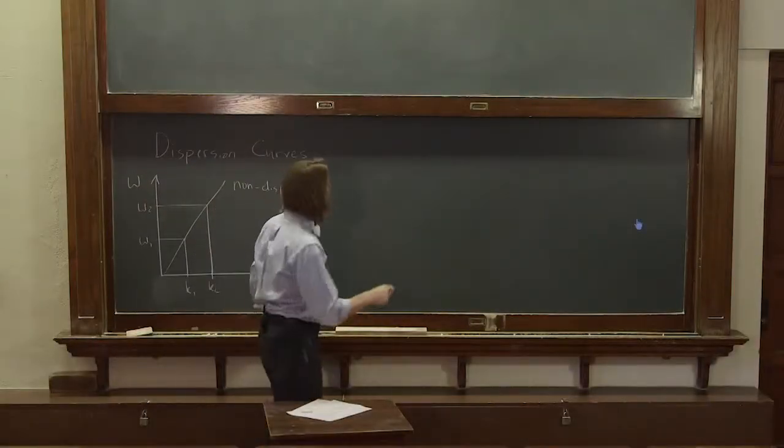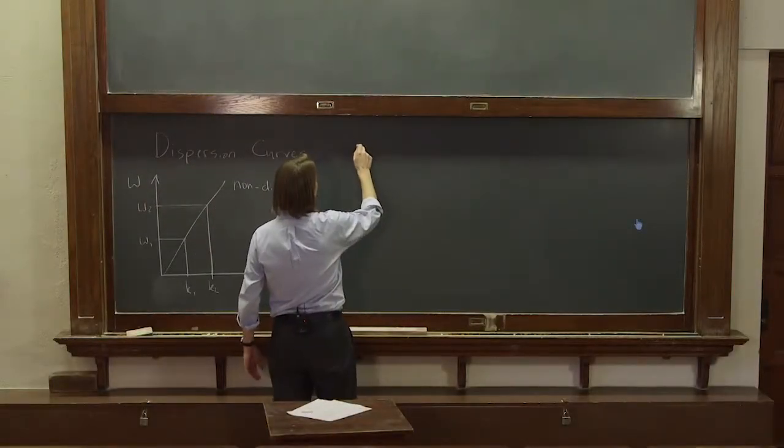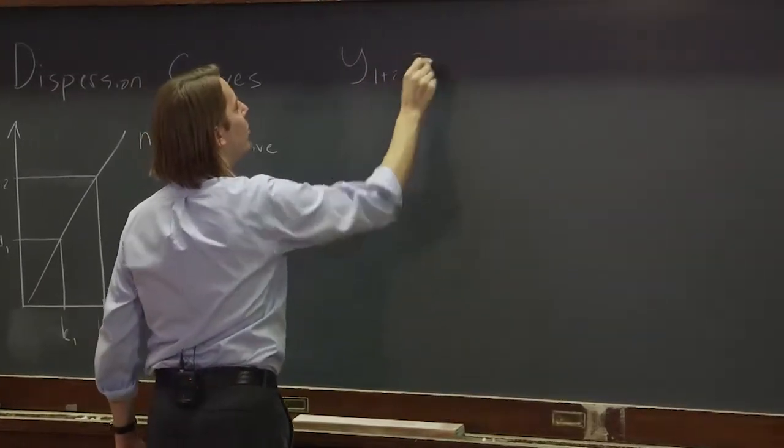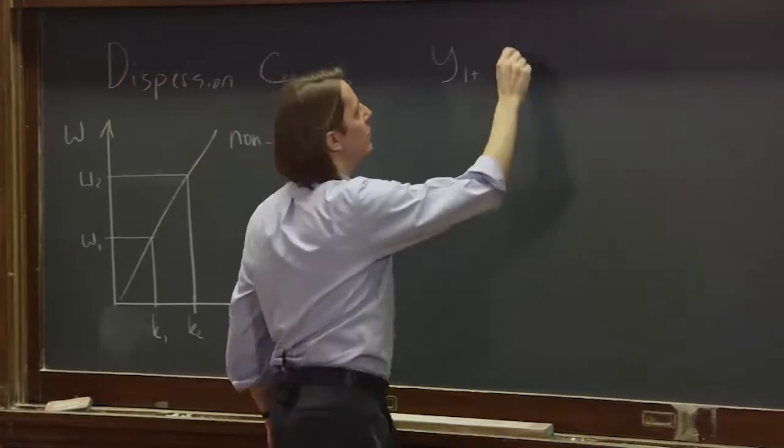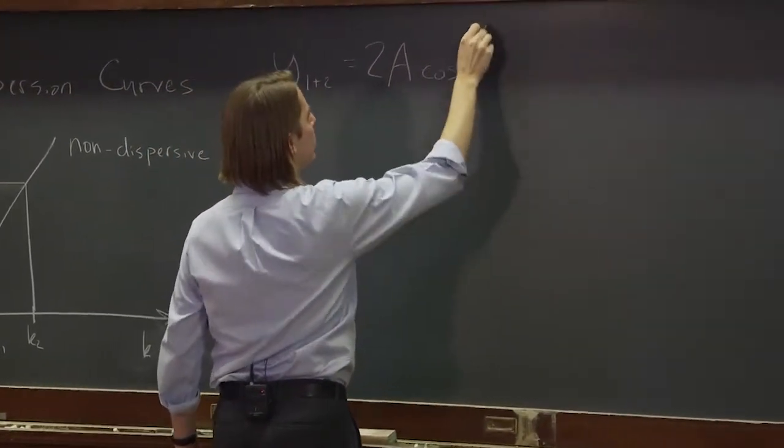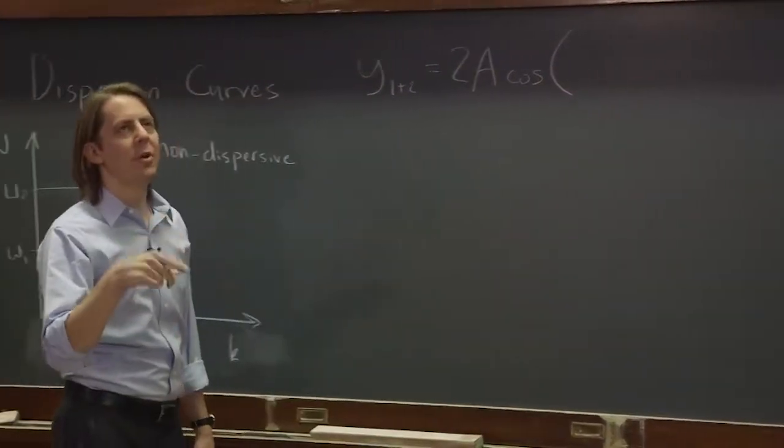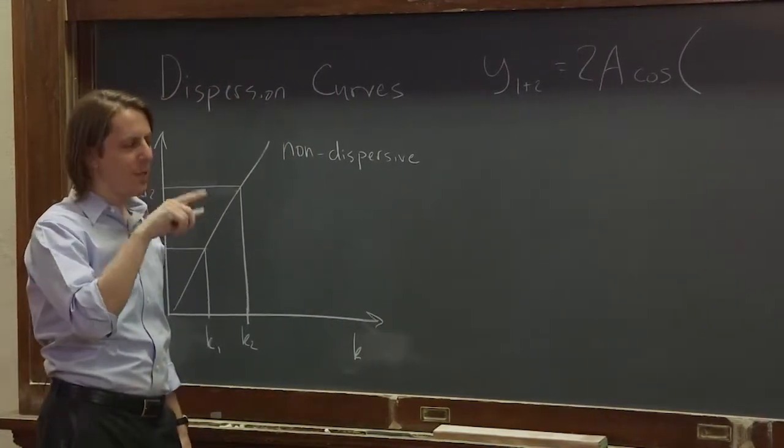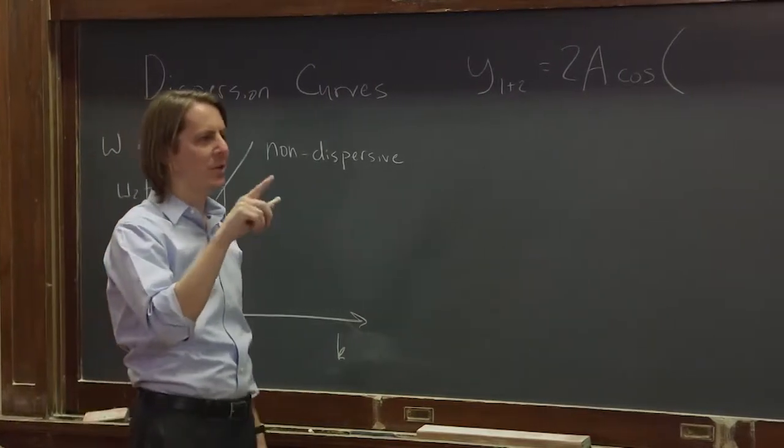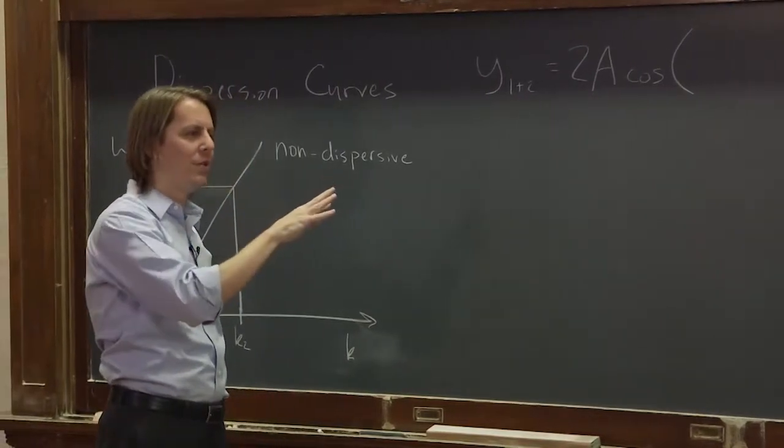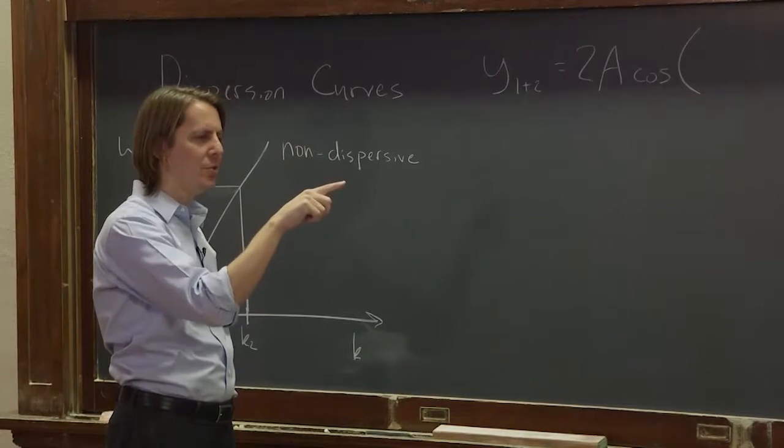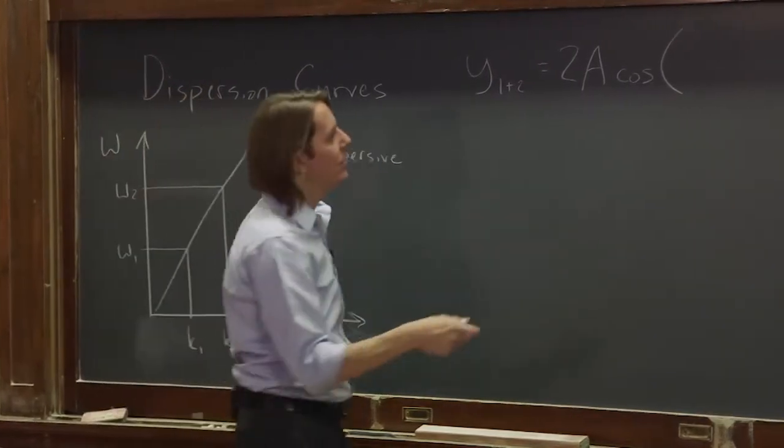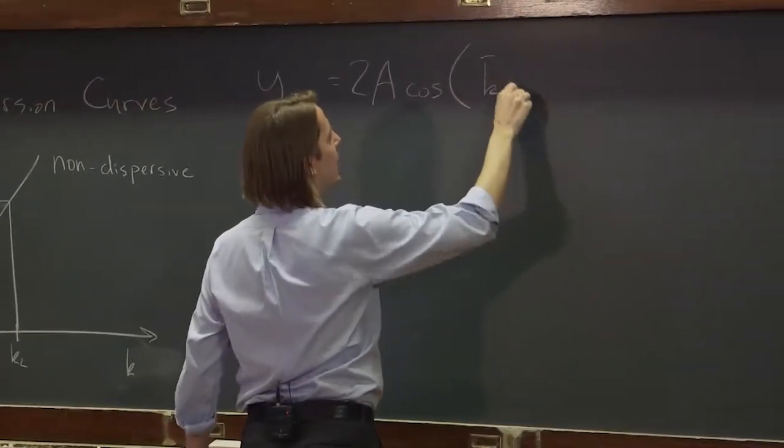Let's add those two sinusoids and write them as a beat pattern. So y1 plus y2, you could say it's 2a times the cosine, and then there's the sum term k1x minus omega 1t plus k2x minus omega 2t. But you could add the k1s, it'd be k1 plus k2 over 2. Well, that's the average k. So you can also write this as k bar for average, x.